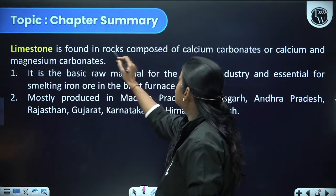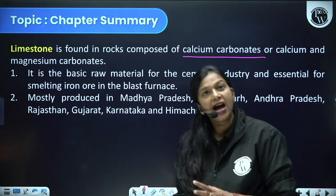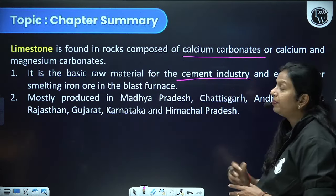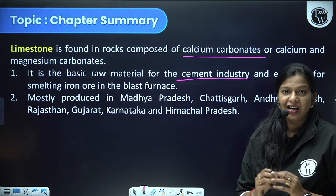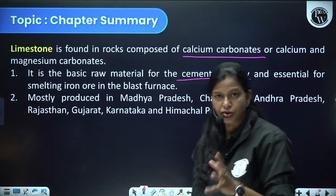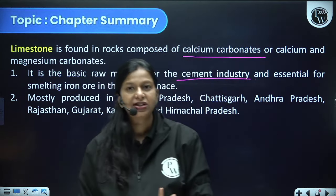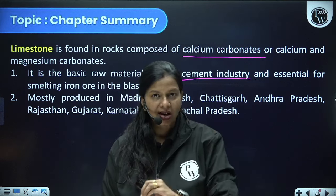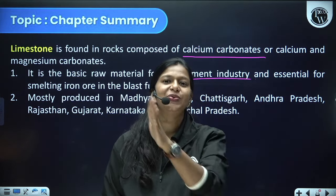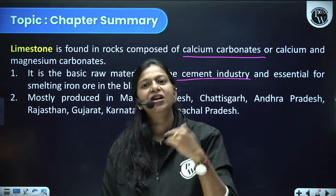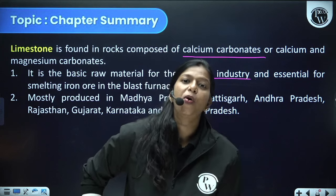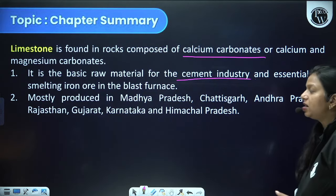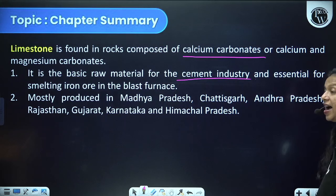The next non-metallic mineral is limestone. Limestone is found in rocks composed of calcium carbonates or calcium and magnesium carbonate. It is a basic raw material for the cement industry and a very essential input in iron ore smelting — the smelting process requires iron ore, coking coal, and limestone in a 4:2:1 ratio. It is mostly produced in Madhya Pradesh, Chhattisgarh, Andhra Pradesh, Rajasthan, Gujarat, Karnataka, and Himachal Pradesh.